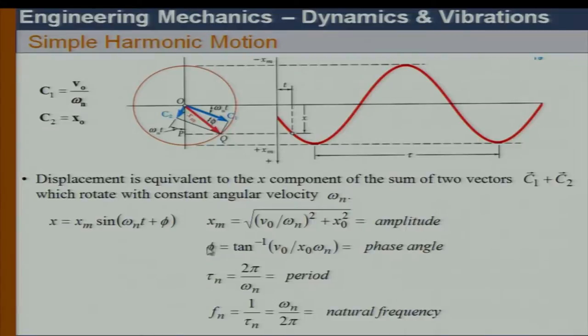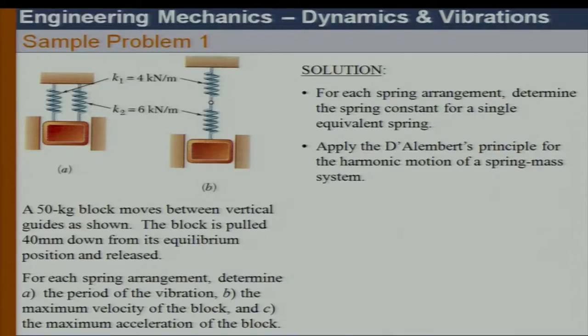If I just release the spring from rest, then V₀ equals zero at t = 0, so V₀ disappears from the solution. Therefore x_m equals x₀. In that situation phi will also disappear, meaning the motion starts from x₀ at t = 0 and follows that motion.